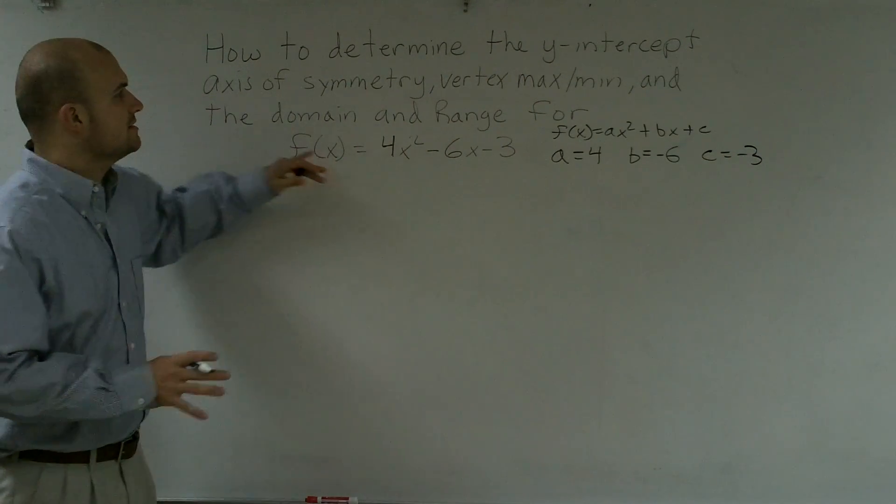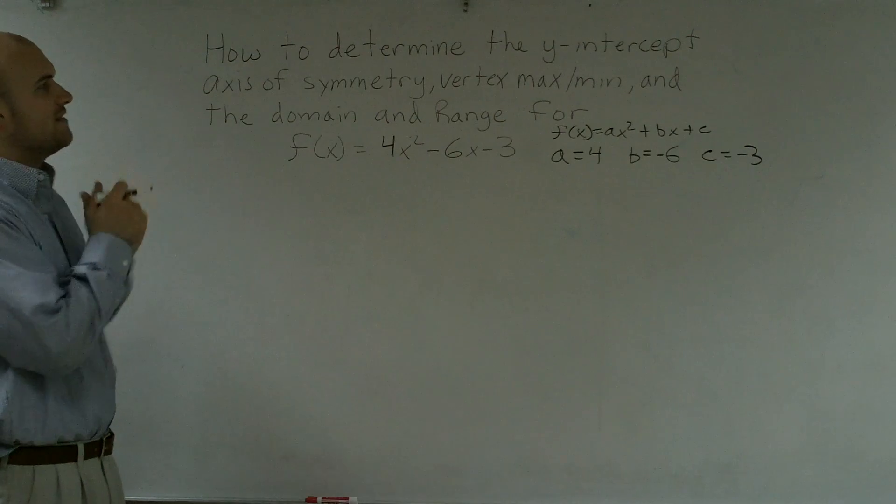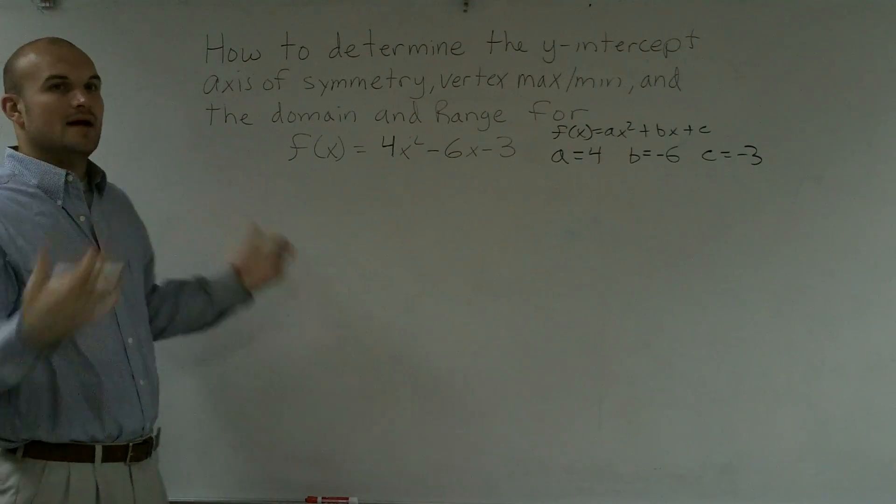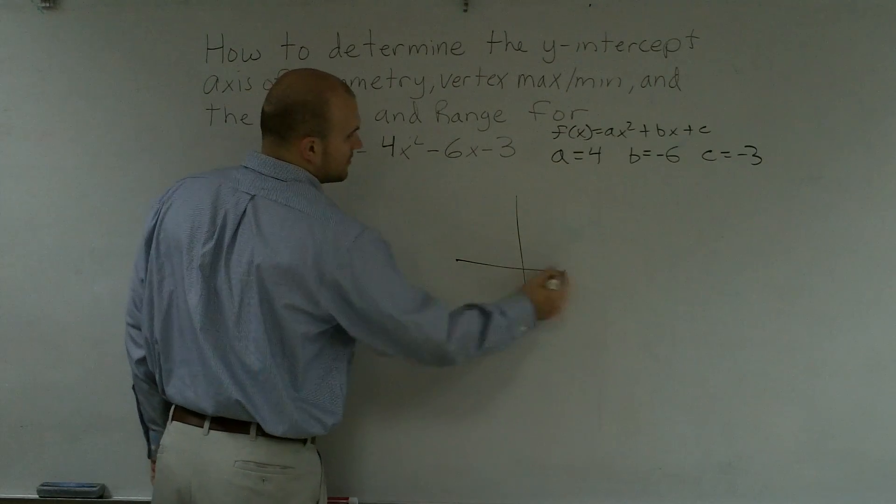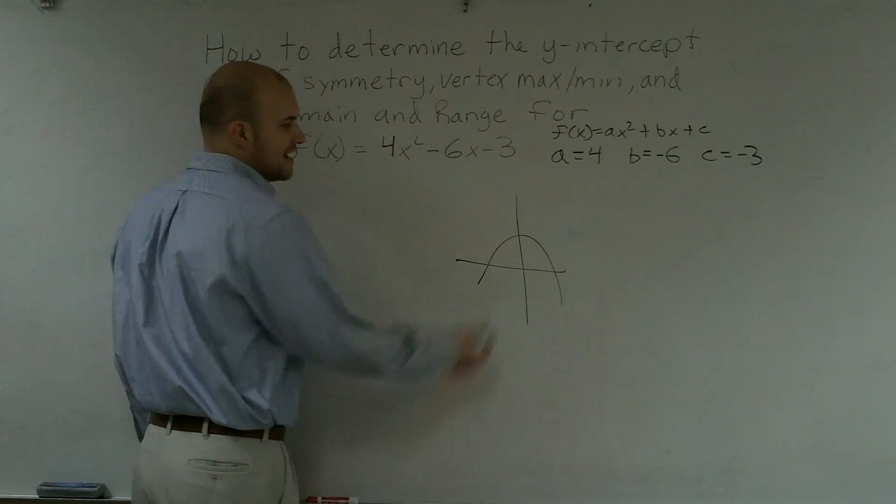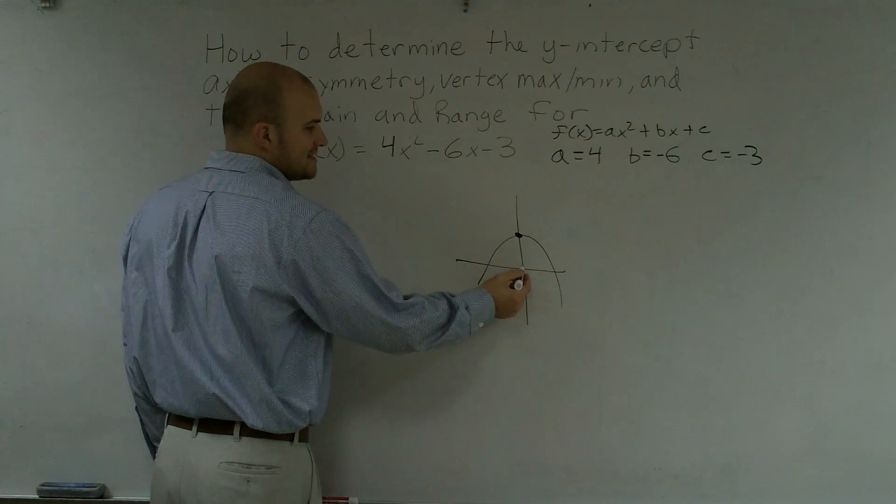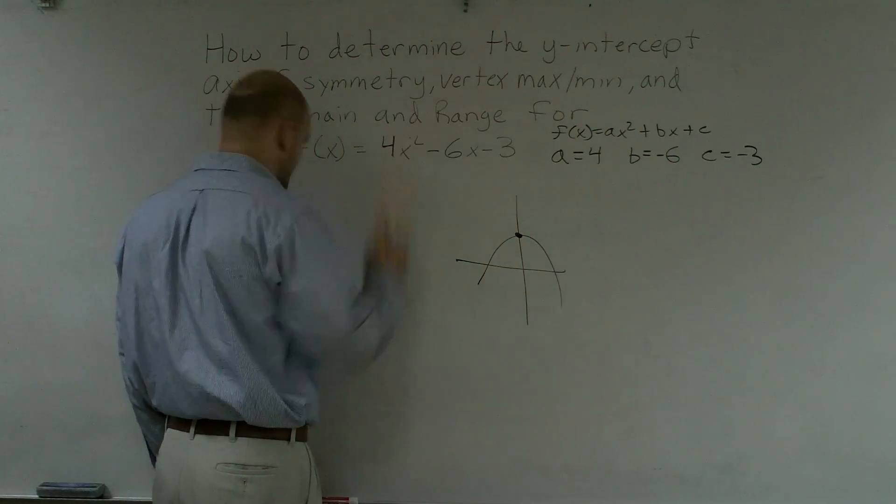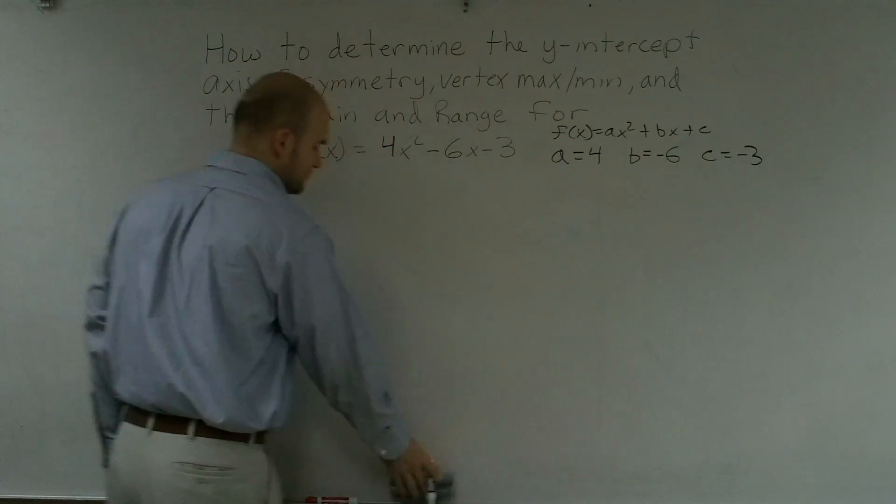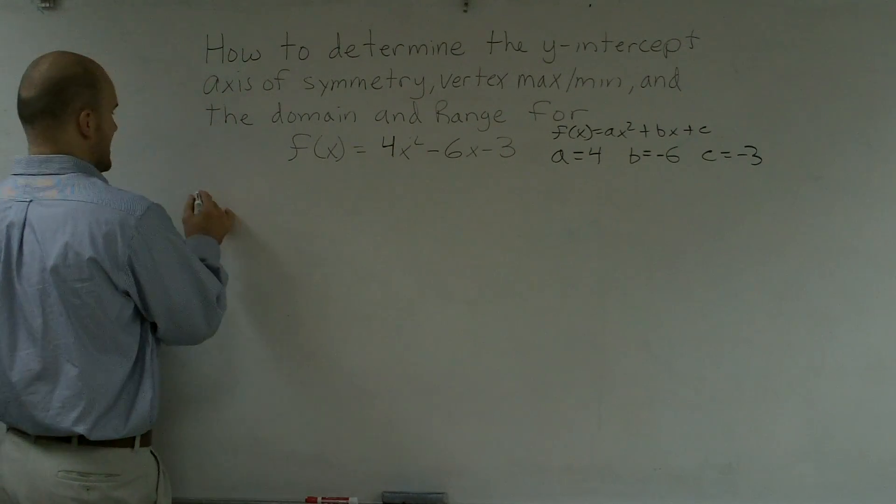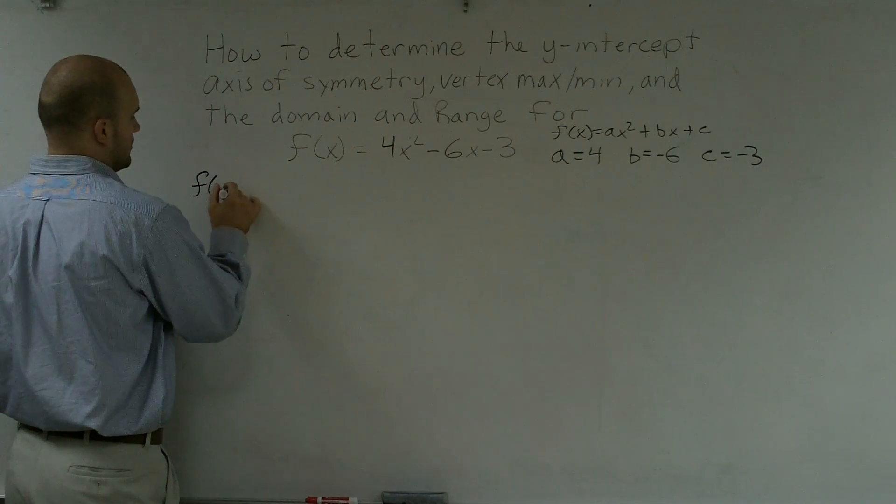Now, when looking at this, if I was going to find my y-intercept, I know that the y-intercept, just to do a quick little sketch, on the y-intercept, my x value is at 0. So therefore, all I need to do is plug in 0 in for x to find the y-intercept. So I'm going to say f(0).